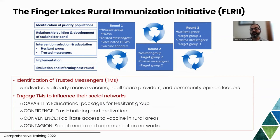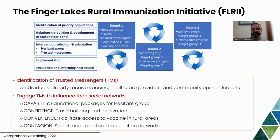The Finger Lakes Rural Immunization Initiative (FLRII) aimed to identify and empower trusted messengers to have better communication with their network members, patients, and clients. It was built upon four pillars: building capability about conversation with patients and network members, improving confidence in those conversations, convenience referring to access to vaccination and facilitation, and contagion — social relationships to promote and broaden the conversations happening between trusted messengers and patients.